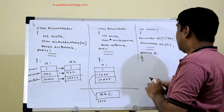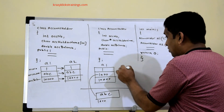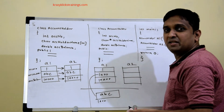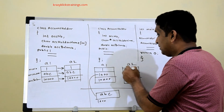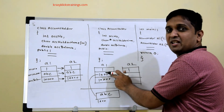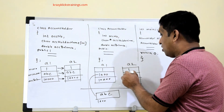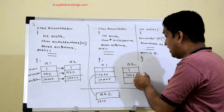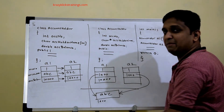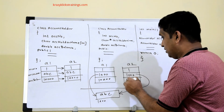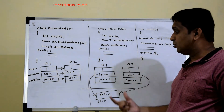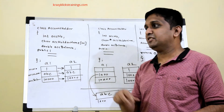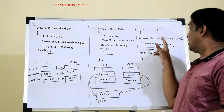With shallow copy on the pointer class, the pointer value (the heap address, say 1000) is copied as-is into a2's name pointer. Now both a1 and a2 have separate pointer variables, but both pointers point to the same memory block on the heap. The balance 10,000 is also copied. This is the diagram for shallow copy when the class member is a pointer.